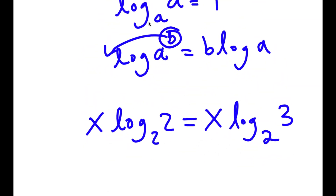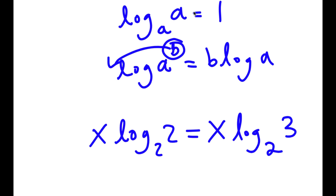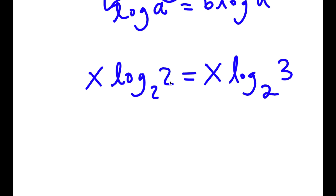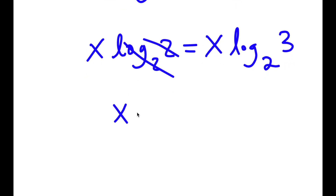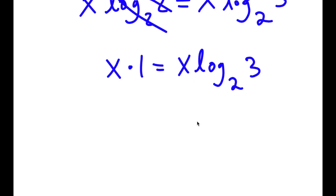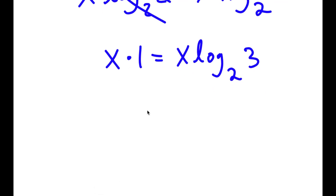Remember, if I have something in the form log base a of a, this is equal to 1. So log base 2 of 2 cancels out, and I get x times 1 is equal to x times log base 2 of 3. And x times 1 is simply x, so I get x is equal to x times log base 2 of 3.